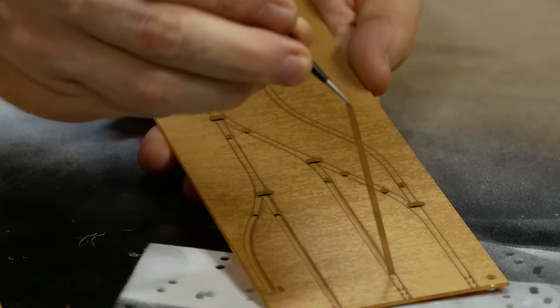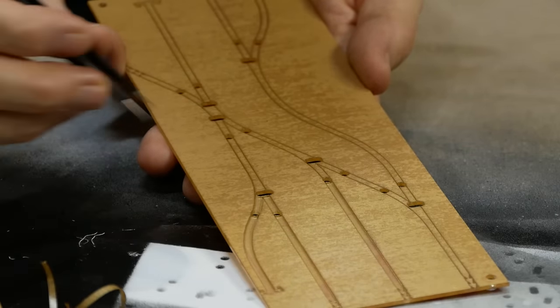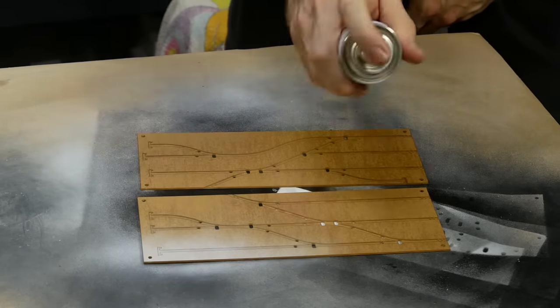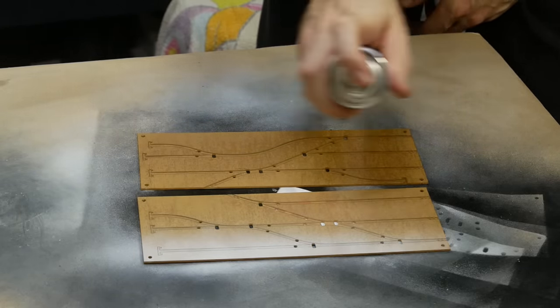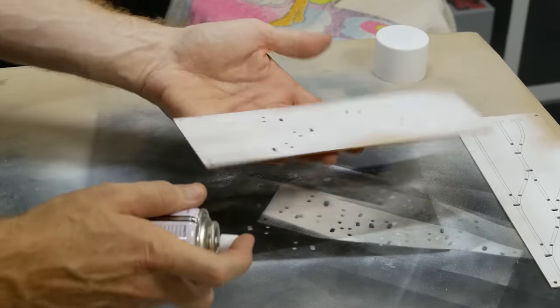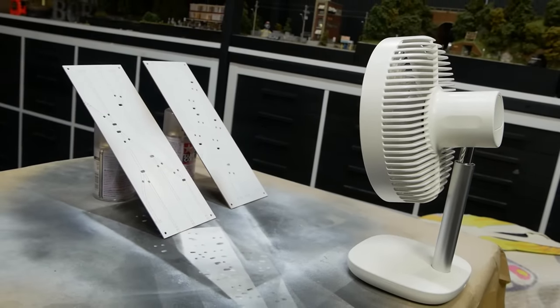In preparation for the white the paper center lines are peeled off. Now the white is applied. I'm using Tamiya white primer for this layer, spraying lightly to avoid any runs. Once applied it's left to dry.